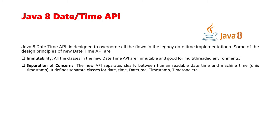The second design principle is separation of concern. The new API clearly separates between human-readable date and time and machine time, like Unix timestamps. It defines separate classes for date, time, datetime, timestamp, timezone, etc. Separation of concern has been very beautifully designed in the Java 8 DateTime API.